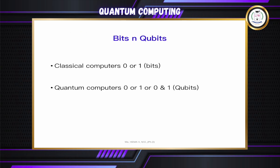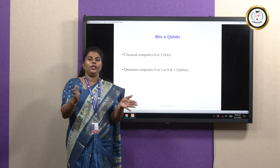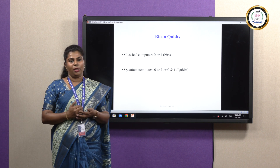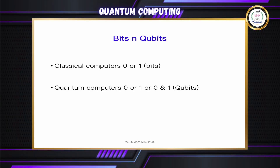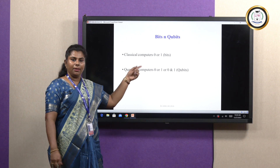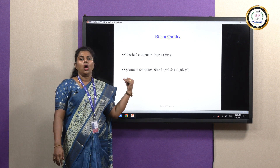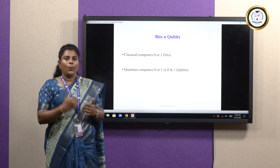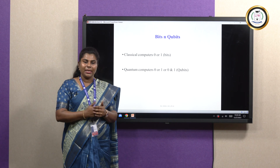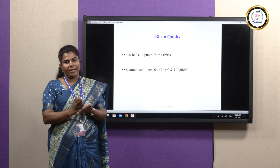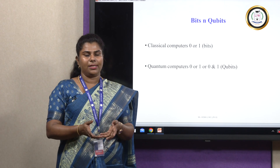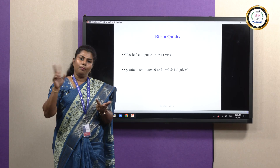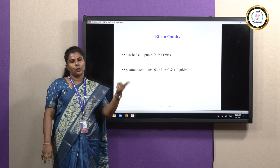Bits and qubits — how does quantum computing differ from normal classical computers? The fundamental unit of a classical computer is bits. Bits means either 0 or 1 — it will be in the state of 0 or the state of 1. Whereas in quantum computers, the fundamental unit is qubits, or quantum bits. Quantum bits can be either 0, or 1, or both 0 and 1 simultaneously — that is the superposition state.